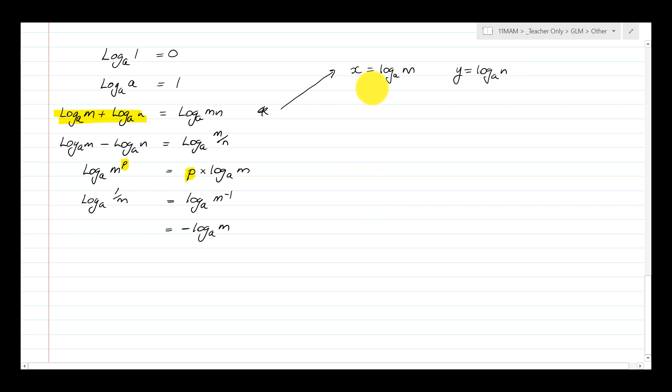Now if I rearrange these into exponential form, I get a to the power of x equals m and a to the power of y equals n. And both of these have the same base, which is base a. What I'm going to do is I'm going to multiply these equations. But I'm going to multiply the left hand side and the right hand sides. If they're equal, which is what this equivalent statement here, the equal sign states, well then it shouldn't matter if I multiply them.